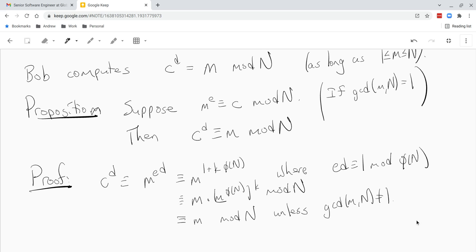Okay. So that proves this proposition. In other words, Bob just computes c to the dth power, d is his private key, and he gets back m.